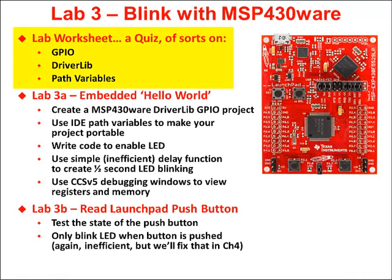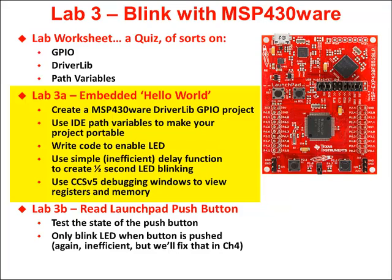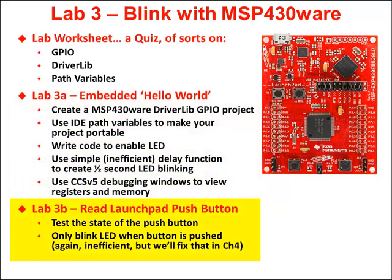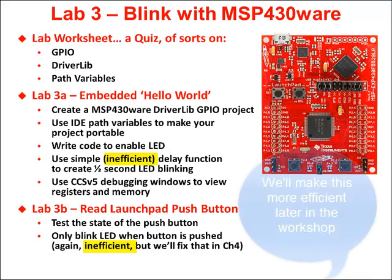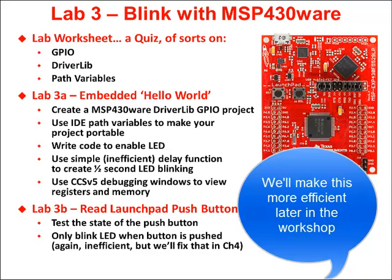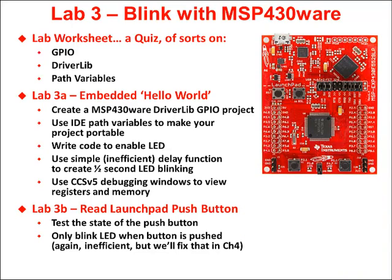Lab 3 starts with a worksheet where you'll answer questions and write a little code — don't skip it, because that code is used in the upcoming lab exercise. Answers are provided at the end of the lab. The two exercises are: first, an embedded hello world — blinking an LED using driver library; second, reading one of the push buttons on the LaunchPad to light the LED when pressed and turn it off when not pressed. Both will be done in an inefficient way for now — the goal is to learn driver library and GPIO. Timers and interrupts will make them more efficient later in the workshop. That's the end of chapter three.